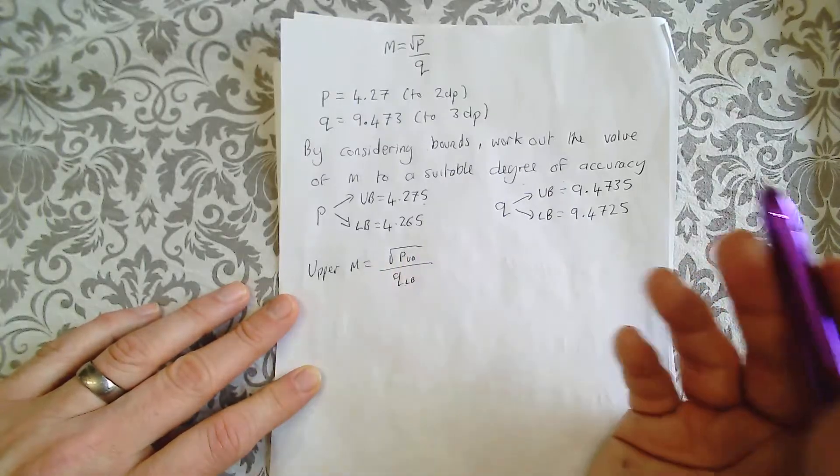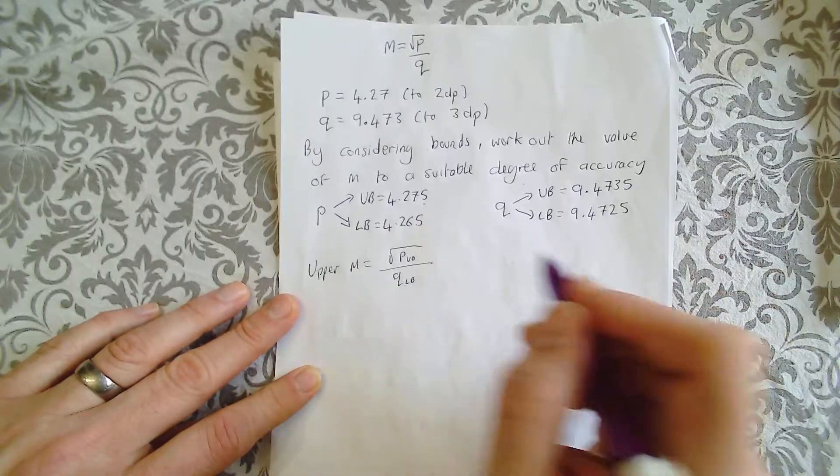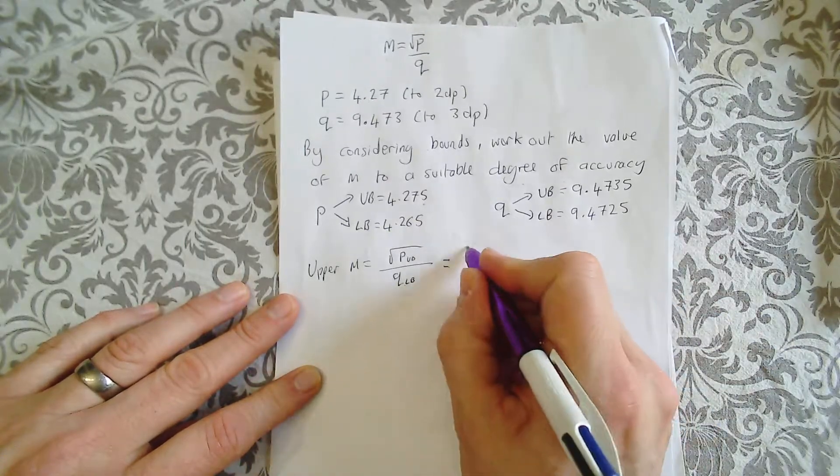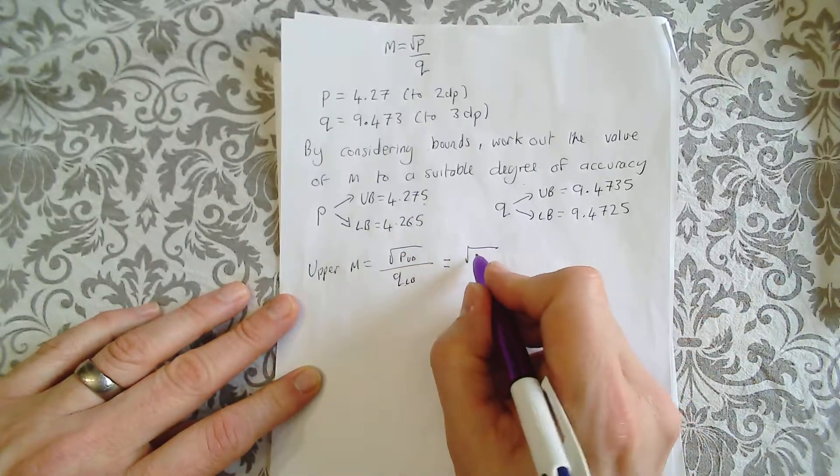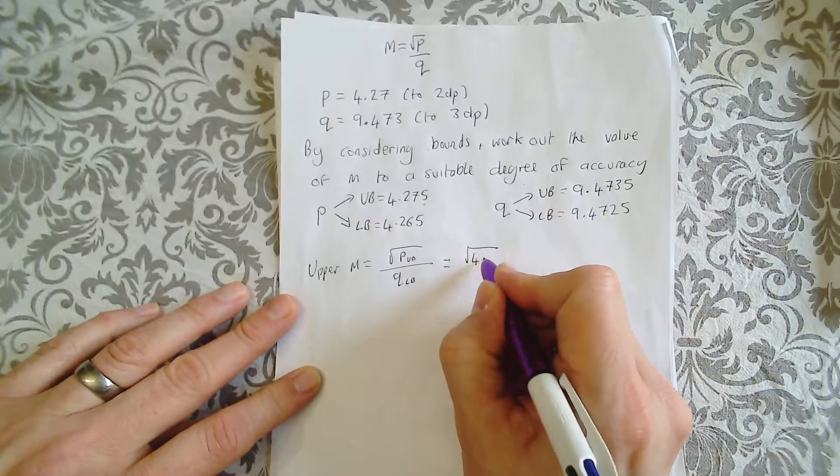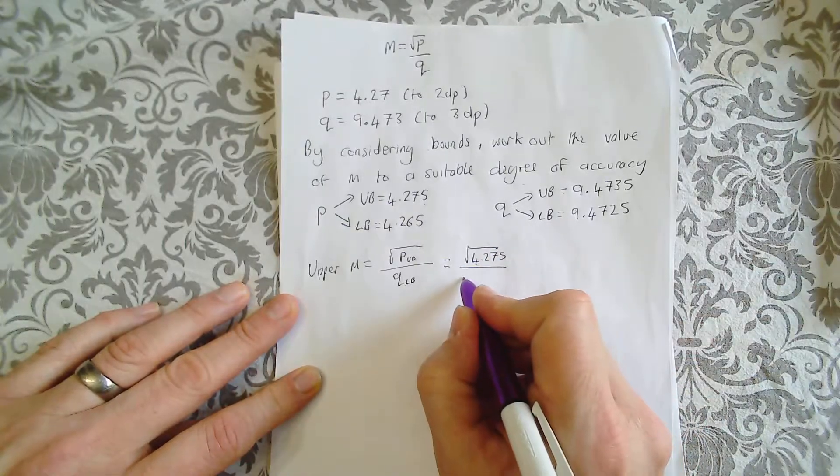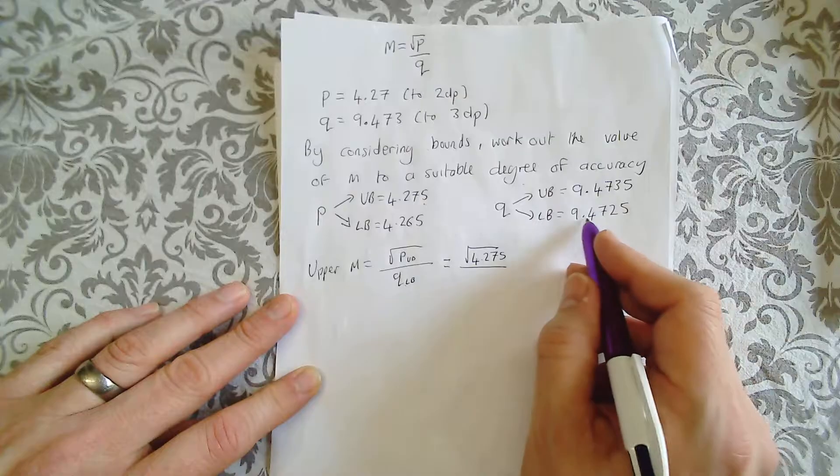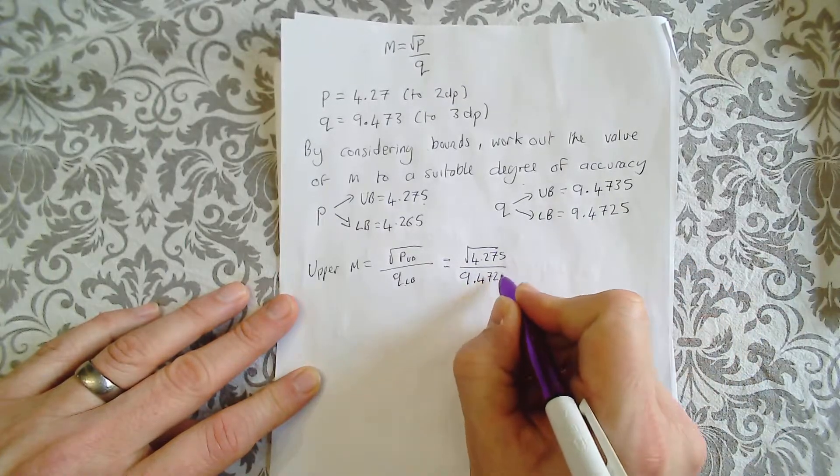The bigger the number at the top, the bigger it will be. When you divide by a smaller number, you get a bigger number. So that would be the square root of your big P, which is 4.275, over your lower Q here, 9.4725.